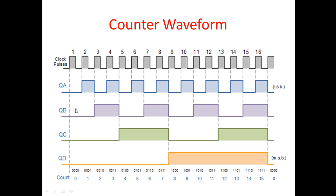At the first rising edge, all four bits are zero. At the next rising edge, the LSB increments to one — so it goes to 0001. For the next rising edge, QB gets one, giving 0010. Like that, for every next rising edge the counter increments by one. The time period of the input clock frequency is what we use to calculate frequency — frequency is one over time period.